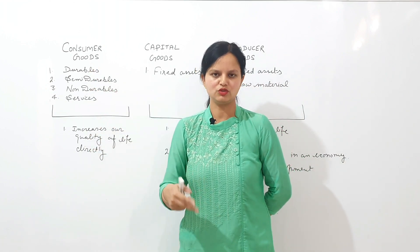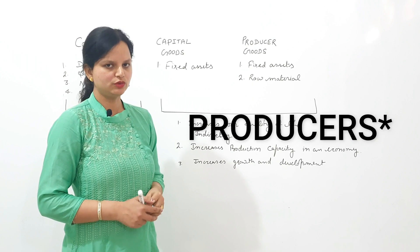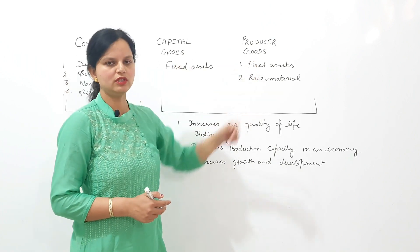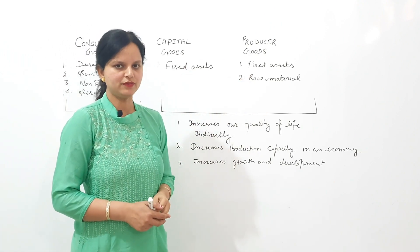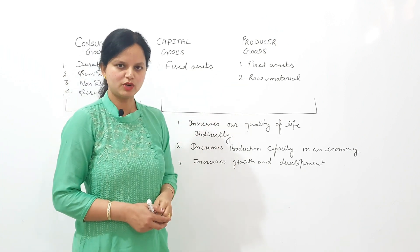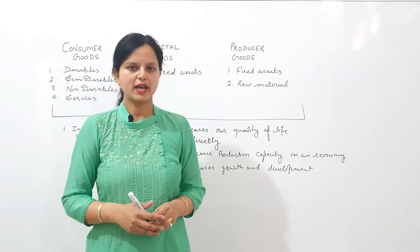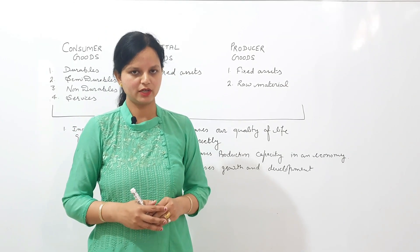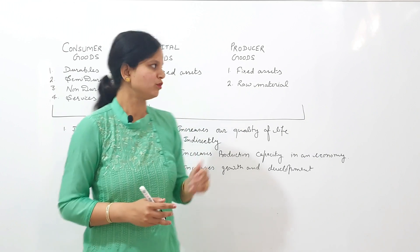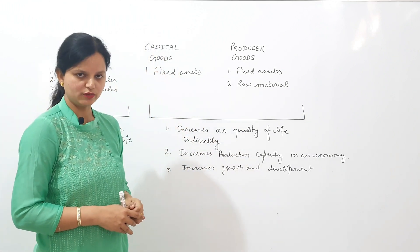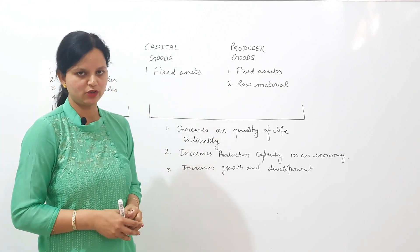Consumer goods increase our quality of life directly. Capital good and producer good increase our quality of life indirectly, because producers, with the help of capital good and producer good, produce consumer goods. Both goods increase production capacity in the economy, which is helpful for the growth and development of an economy. So the first significance is it is helpful in calculating GDP, and the second is both goods increase quality of life directly and indirectly.